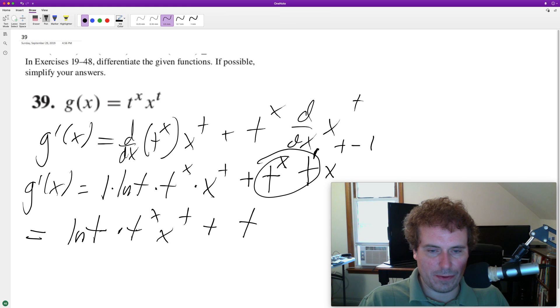And then we have times x to the t minus one. It's a bit messy, so I can just rewrite this really quick.